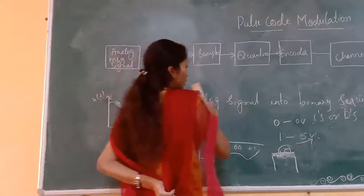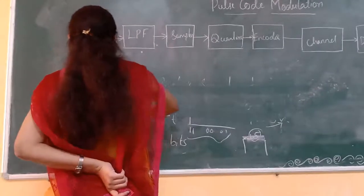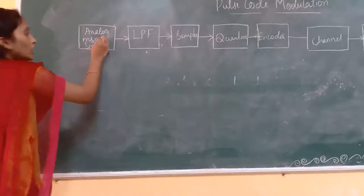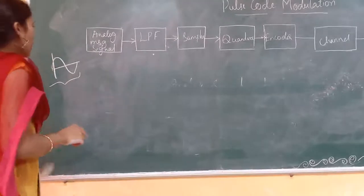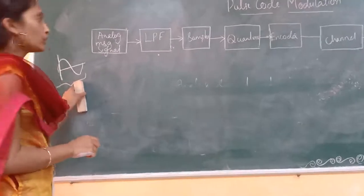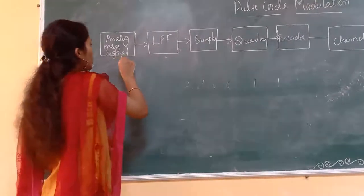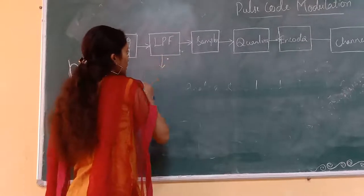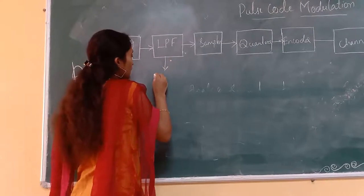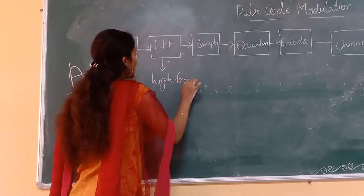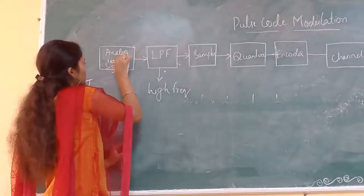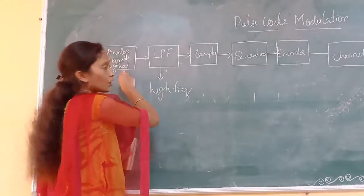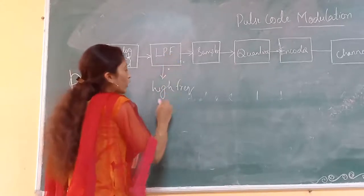Now let us see the pulse code modulation. We are giving the analog input signal, which contains information. We are going to digitize this analog information to get the pulse code modulated signal. The analog signal is given to the low pass filter, which eliminates the high frequency components present in the analog input signal to avoid the aliasing effect.